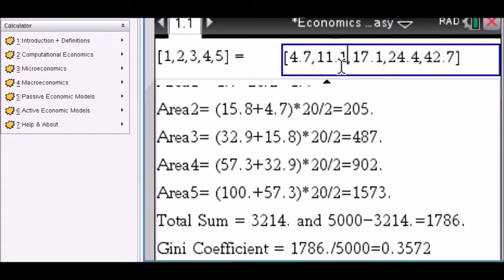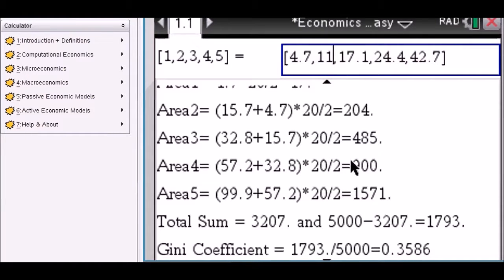And finally you are going to get in this case a Genie Coefficient of 0.3572. You change some values here. Let's say the 11. And immediately your Genie Coefficient adjusts to the change. Everything done here step-by-step using trapezoidal area computations.